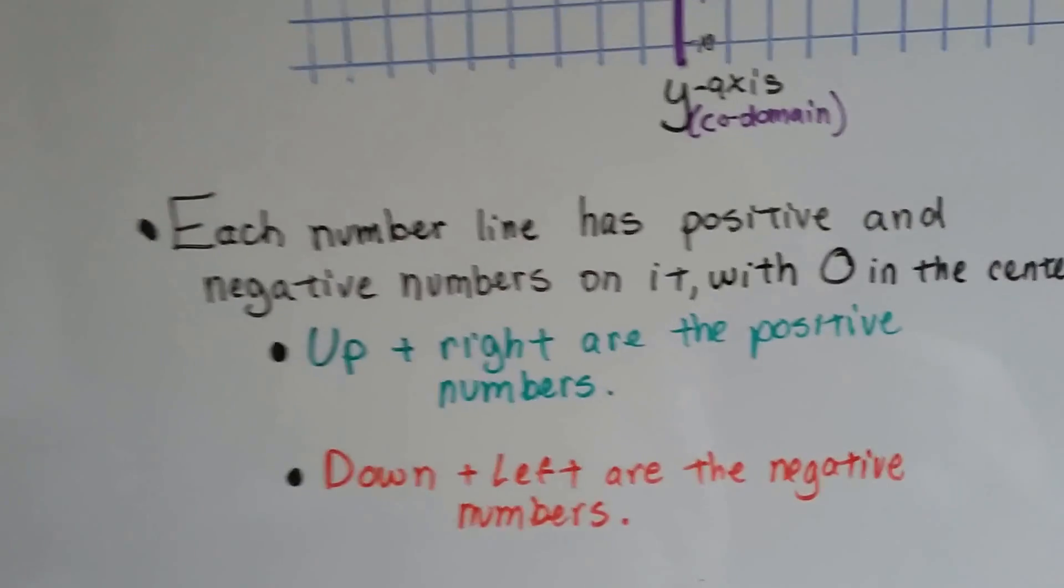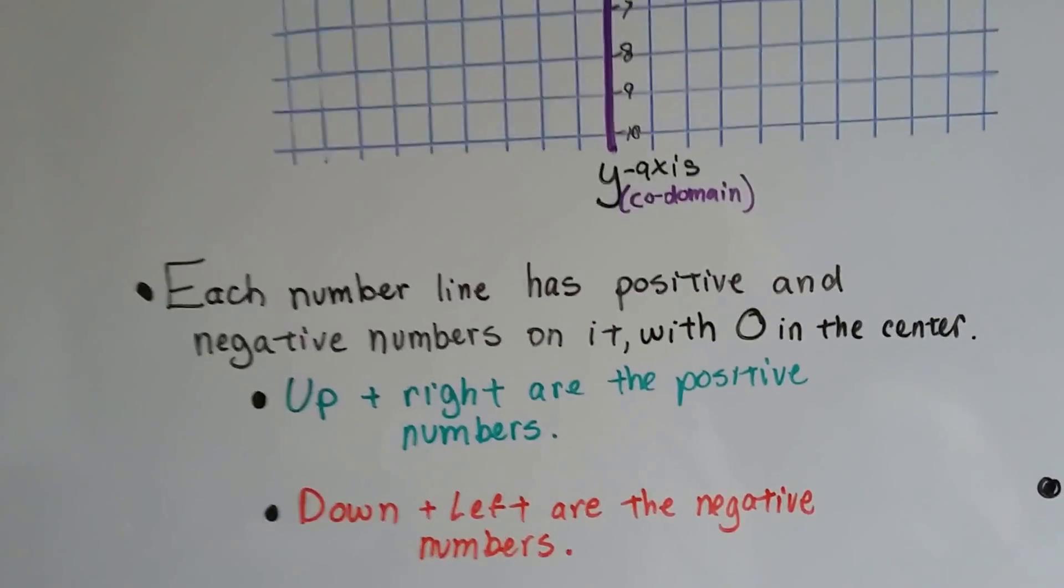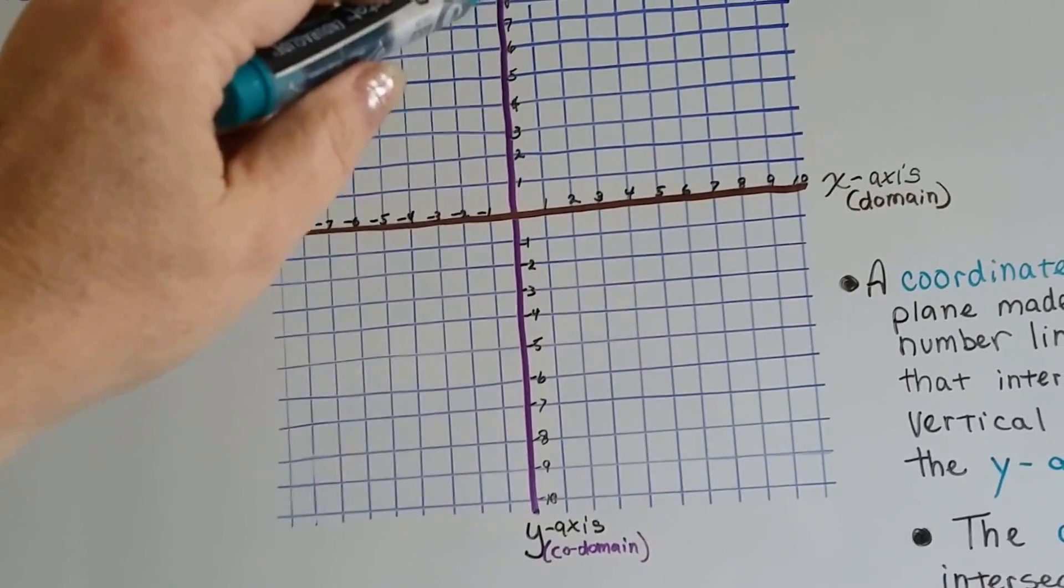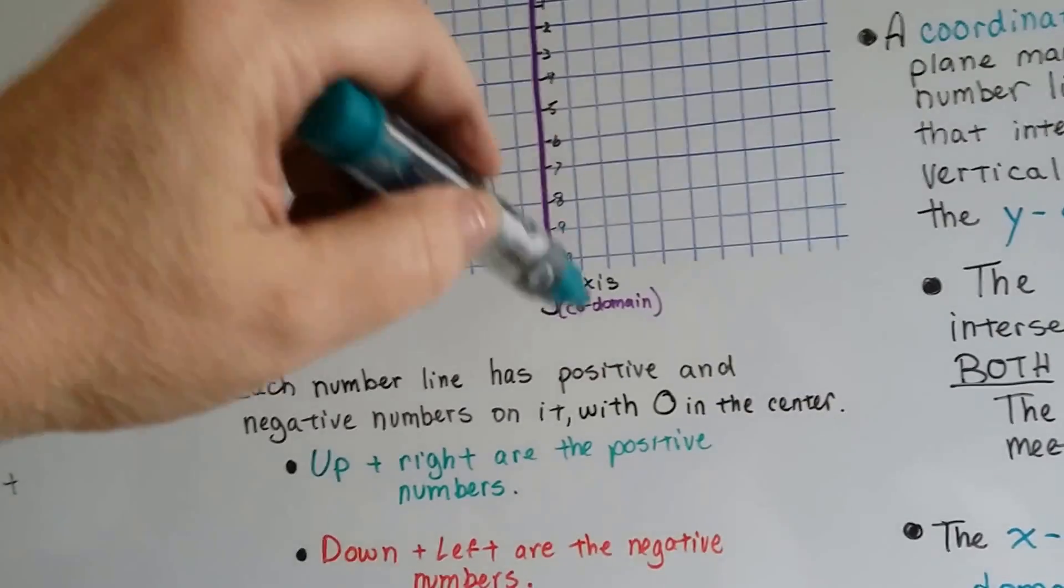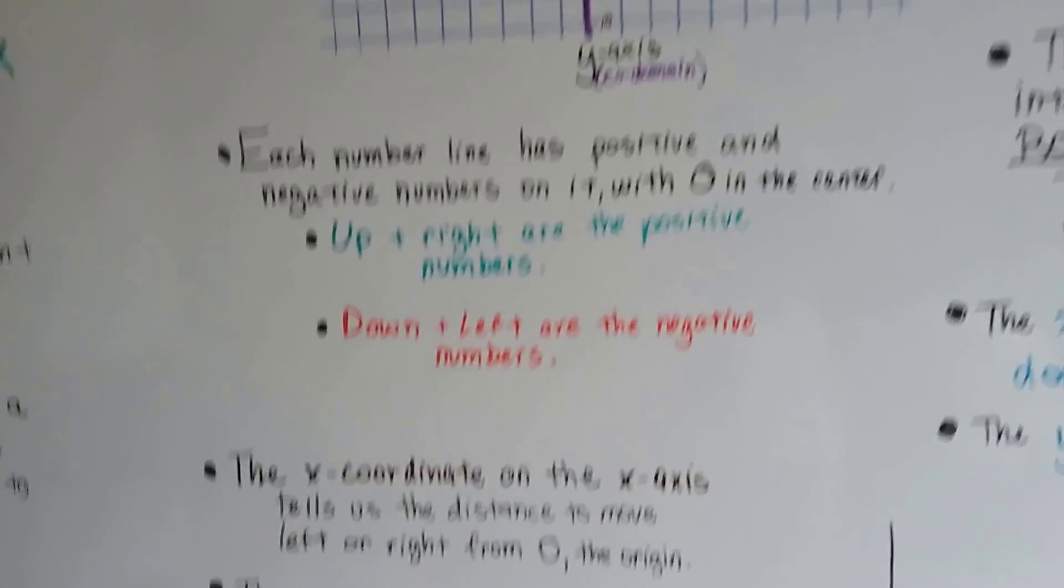Each number line has positive and negative numbers on it, with zero in the center. Up and to the right, if you go straight up here and to the right, those are positive numbers. And if you go down and to the left of the zero point, those are negative numbers.